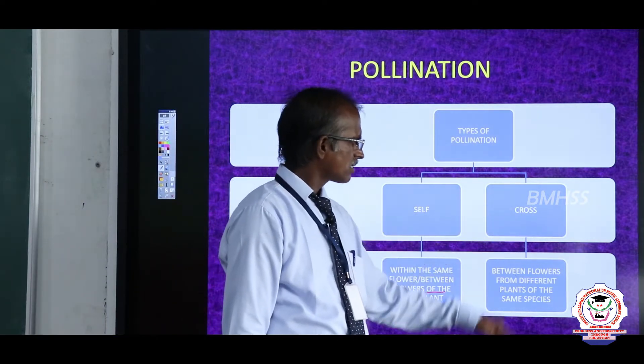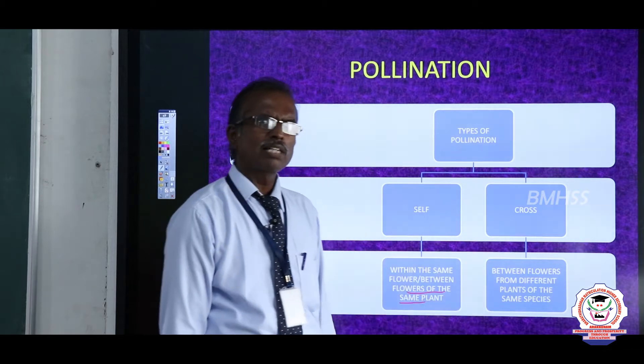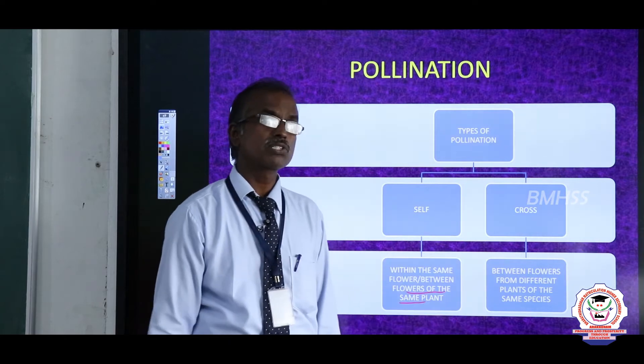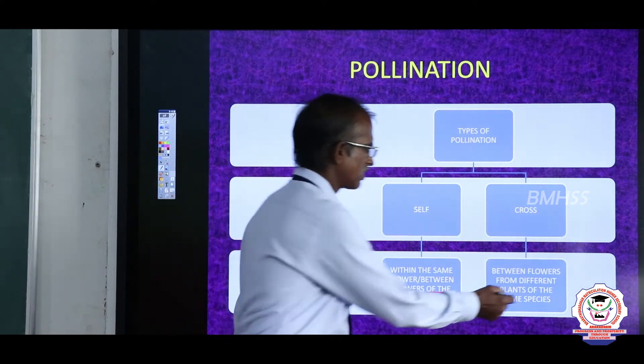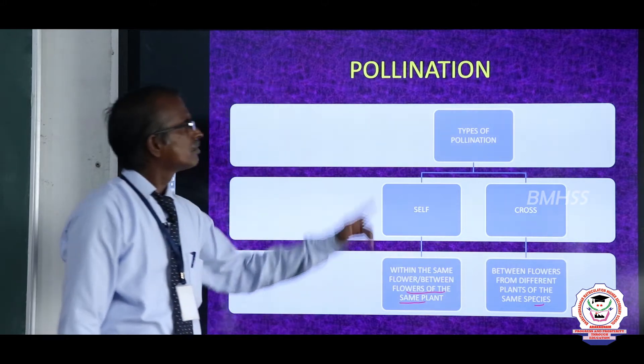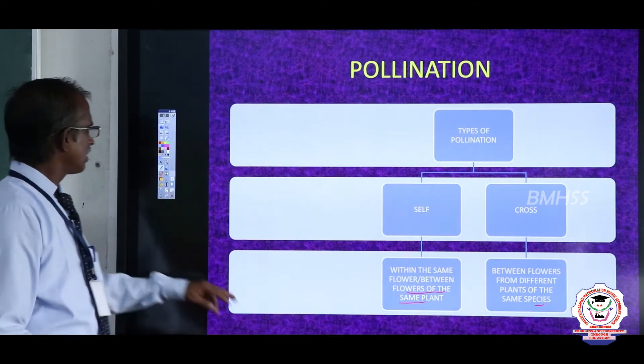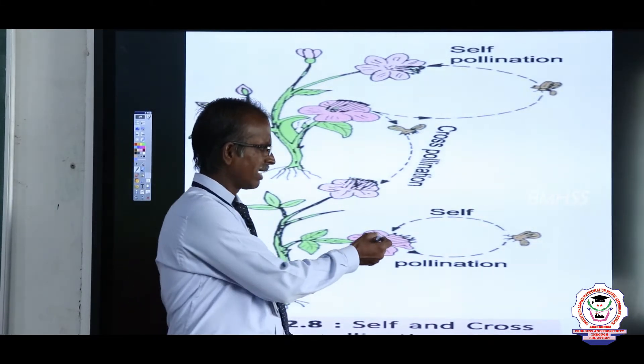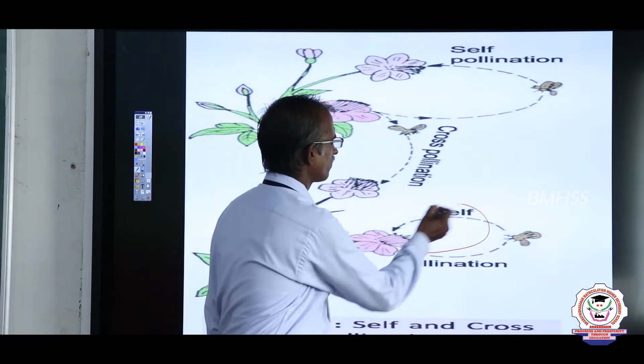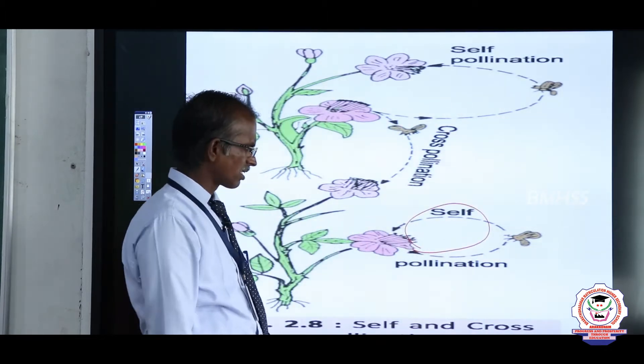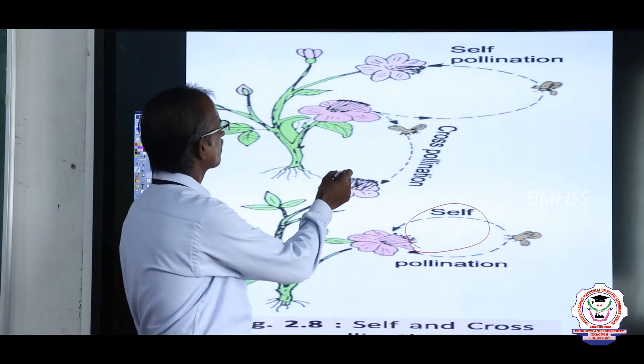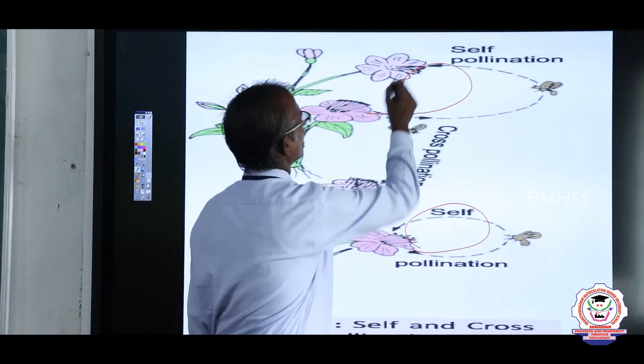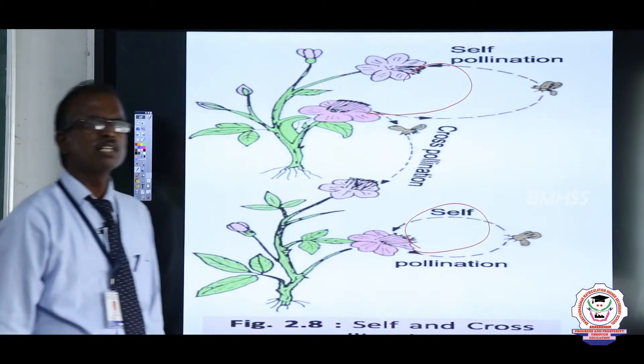Cross-pollination is the transfer of pollen grain that occurs between flowers of different plants of the same species. In the case of self-pollination, the transfer of pollen grain occurs within the same flower or between the flowers of the same plant.